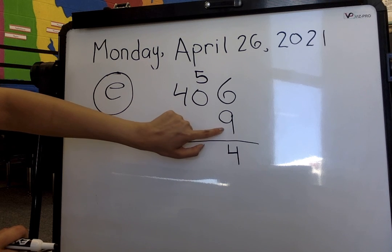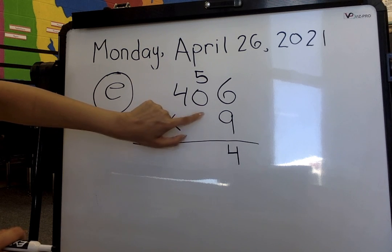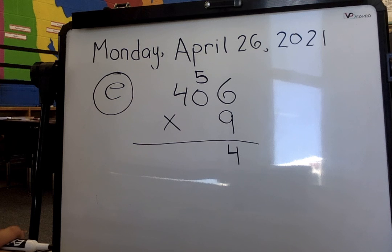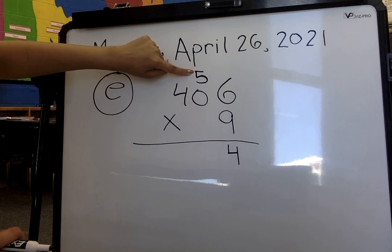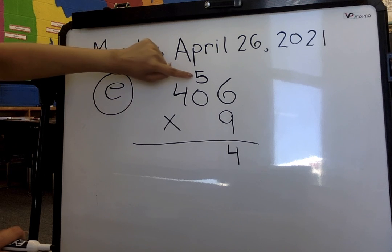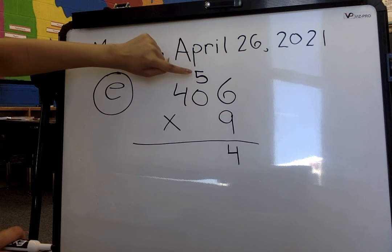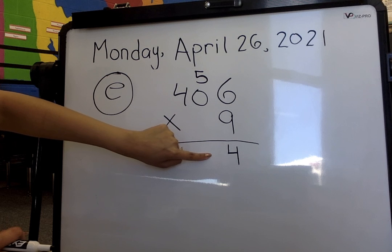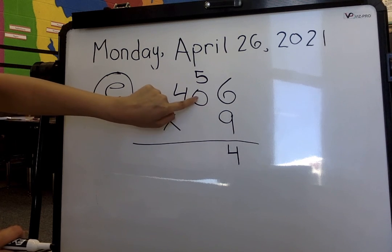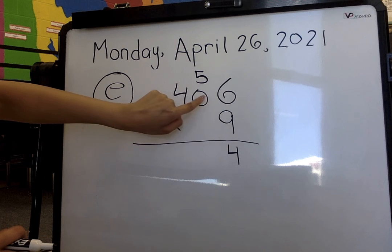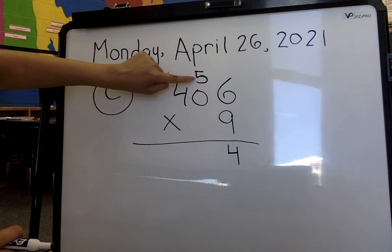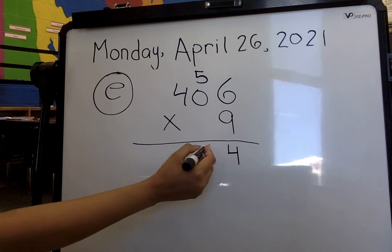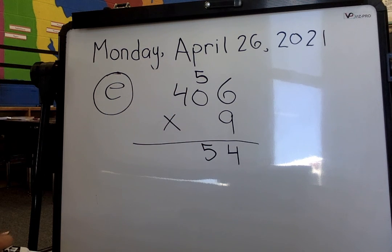Now, am I going to multiply my 9 to my 0, or to my 5? To my 0, never to any number that I carry over. Remember, every time we carry over a number, we only add it. We never multiply it. So 9 times 0 gives me 0, so I bring my 5 down, or I add it to 0, and it gives me 5.